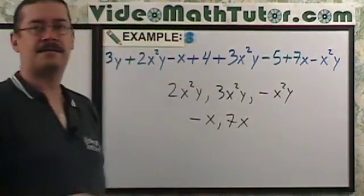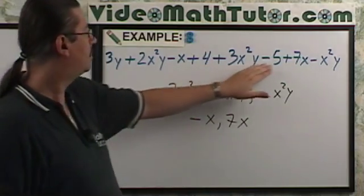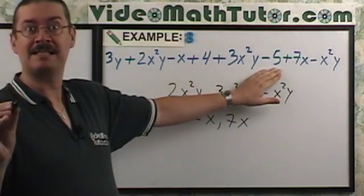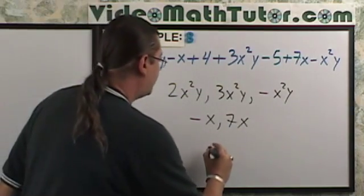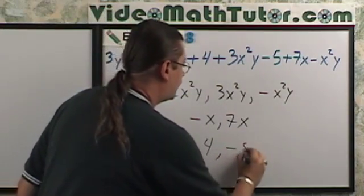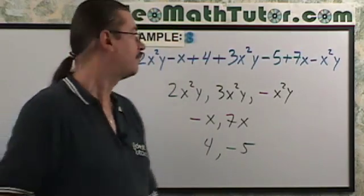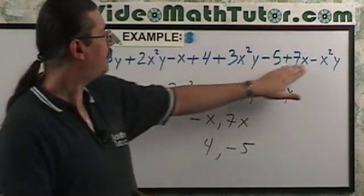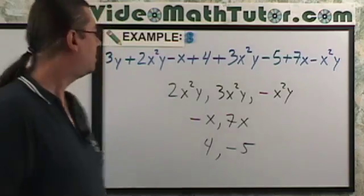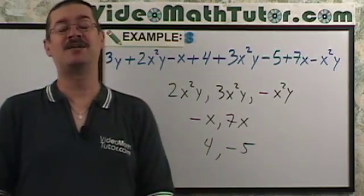Anything else? There's a 4. We can think of that as negative 5. Aha! So, 4, negative 5. Constants are considered like terms. Anything else? We've pretty much covered all our bases. So, here is our list of like terms.